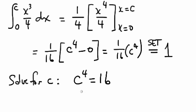c could either equal minus 2 or plus 2, but if we had it be equal to minus 2, then f of x, x cubed over 4 would not be positive, and so we must have c is equal to positive 2.